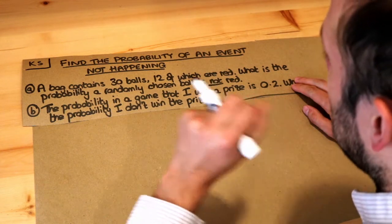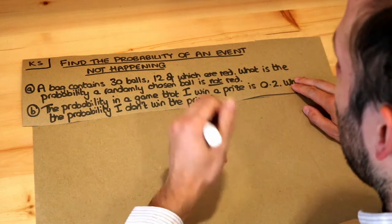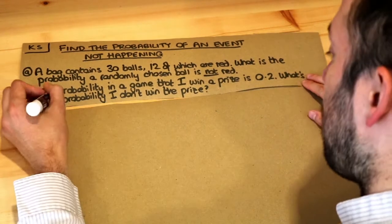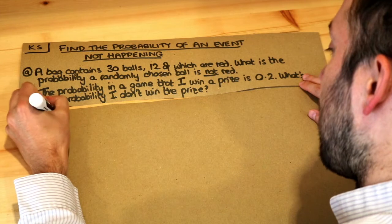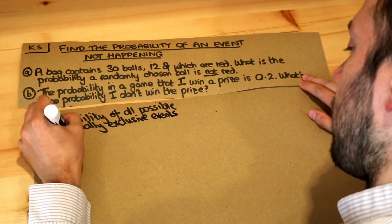We saw in a previous video the idea of mutually exclusive events. Mutually exclusive events are just things which can't happen at the same time, and we also saw that the probability of all possible mutually exclusive events sum to one.